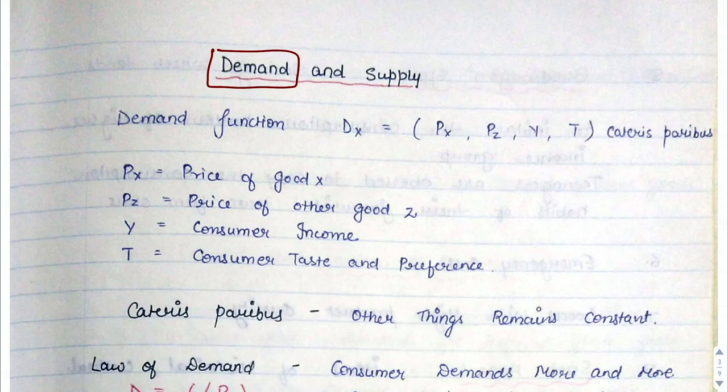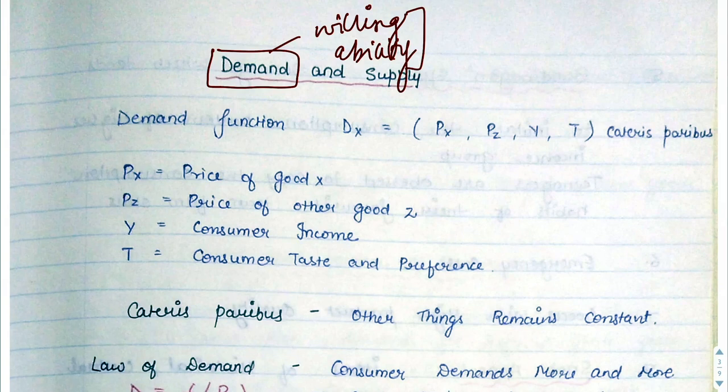Demand comes to mind as simply wanting a product, but that is not correct. Demand is when we want to buy something AND have the ability to buy it. For example, I may want to buy an Audi, but if I don't have enough money, it is just a desire, not demand. Demand is defined as: the quantity of a commodity which a consumer is willing and able to purchase at any given price during a specific period of time.